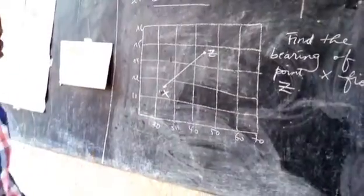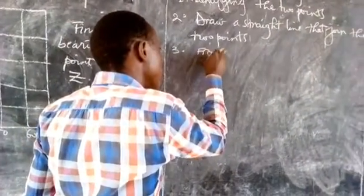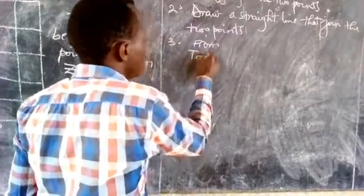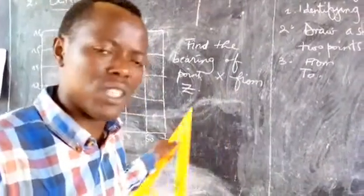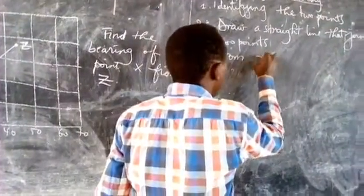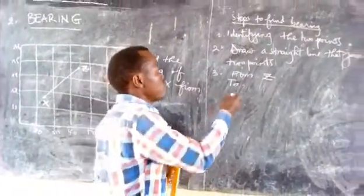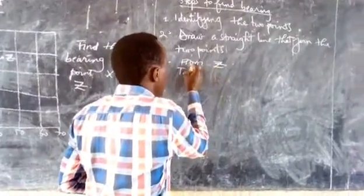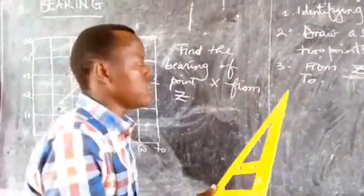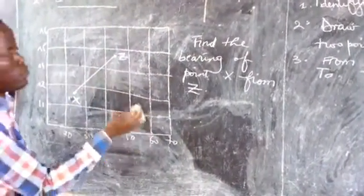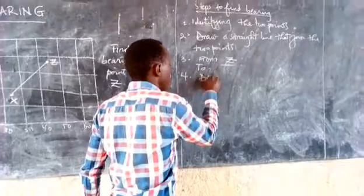After drawing that line, you look at step number three: find the letter that followed the word 'from'. The question says bearing of point X from Z, meaning the letter that followed 'from' is Z. So you come to point Z. Step number four: draw a cardinal point on the letter Z.